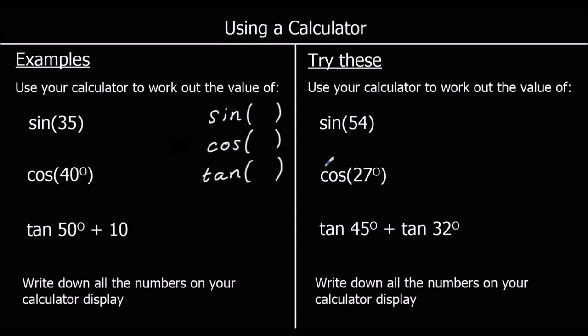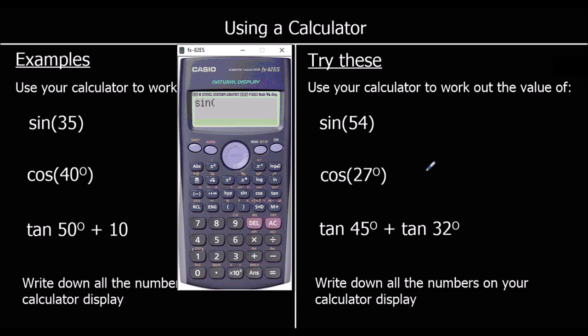For the first question, sin 35: press the sin button and it opens a bracket. Inside the bracket is where the angle goes. So type 35, then close the bracket. We've got sin 35 — press equals and we get 0.57357 and so on. Write down all the numbers on the display.